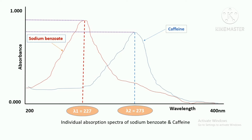We are considering two drugs: sodium benzoate and caffeine. The red spectrum is that of sodium benzoate recorded individually, and the blue one is the spectrum of caffeine overlapped on the spectrum of sodium benzoate. For sodium benzoate, we can easily identify the point of maximum absorbance — that is lambda one, the lambda max of sodium benzoate at 227 nanometers. Similarly, we can find the absorption maxima for caffeine, which is at 273 nanometers.